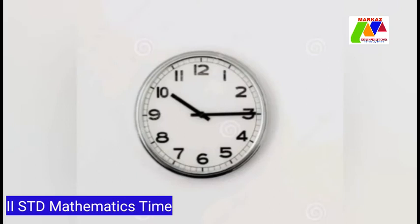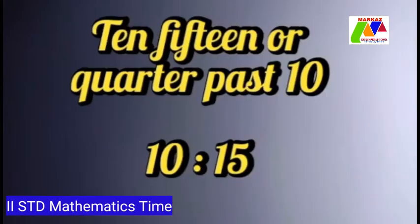Here is another clock. In this, the hour hand is between 10 and 11, and the minute hand is at the number 3. That means 3 multiplied by 5 minutes in each interval becomes 15 minutes. We say 10:15 or quarter past 10. We can write it like this.